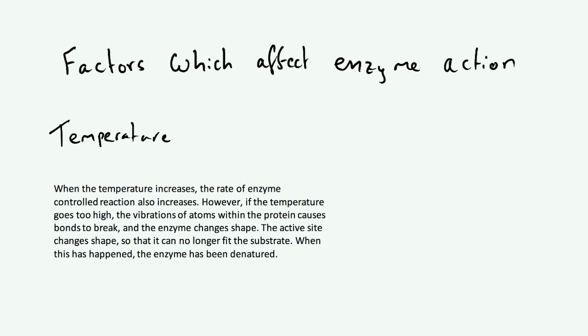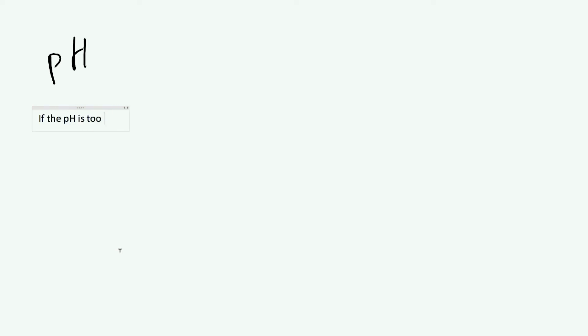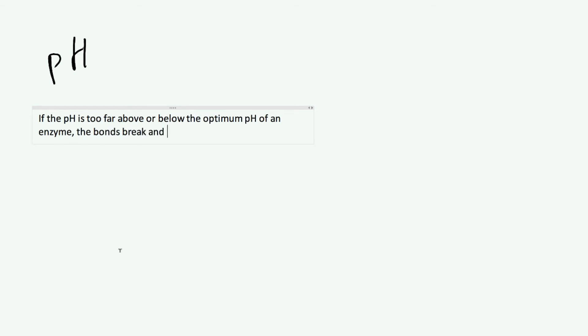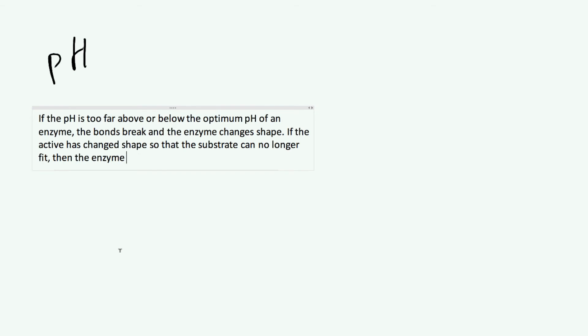There is one more variable which can also cause an enzyme to denature, and that is the pH. Enzymes have an optimum pH, and if the pH goes too far above or too far below this optimum pH, the same thing happens — the bonds break and you get a change of shape of your enzyme. The optimum pH is the pH at which the enzyme is working best and its structure is optimal. Above or below the optimum pH, the bonds break, the enzyme changes shape, the active site changes so the substrate can no longer fit, and the enzyme has been denatured.